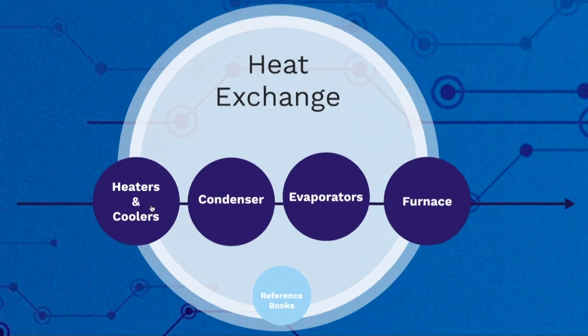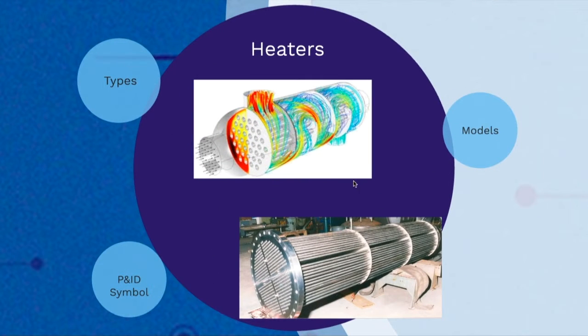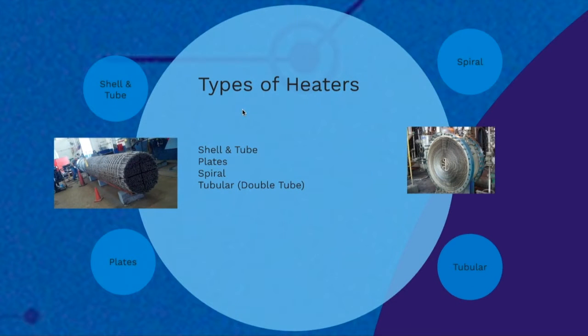Let's start with heaters and coolers. There are several types: shell and tube heat exchangers, which are the most common, plate heaters, spiral heaters, and tubular or double tube heaters.